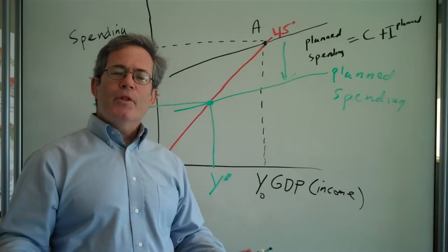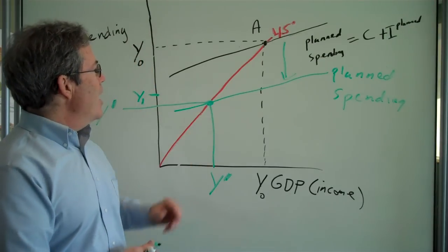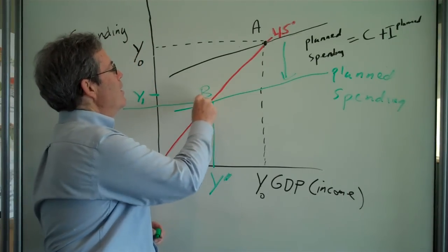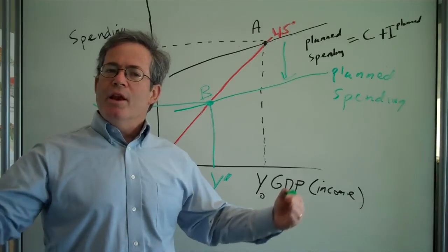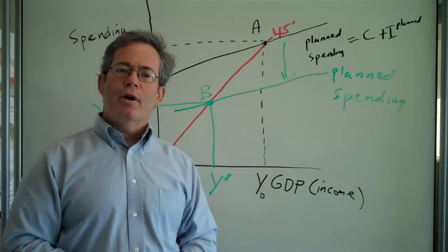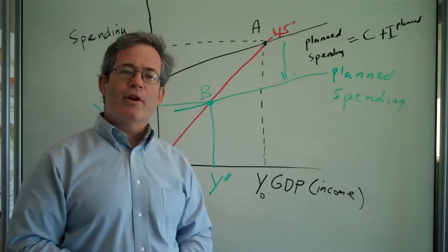Now, we could hopefully move in the opposite direction as well. Once the economy is down here, say, at point B in a recession, if spending goes up, the economy will, through the multiplier process, move in the opposite direction.